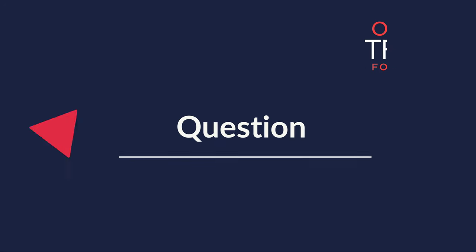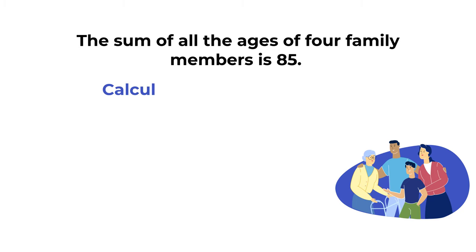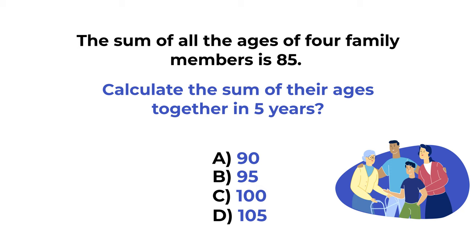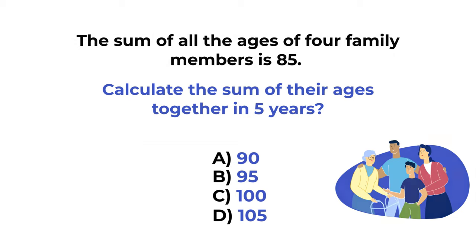Here's a puzzling question you might frequently see on the test. The sum of all ages of four family members is 85. What would be the sum of their ages in five years? You have four choices: A) 90, B) 95, C) 100, and D) 105. Give yourself 20 to 30 seconds to see if you can come up with the solution.